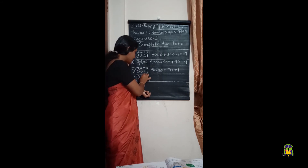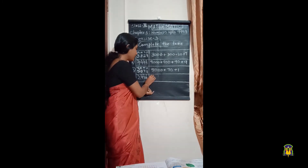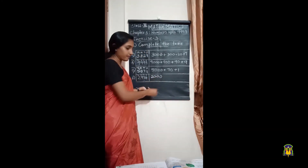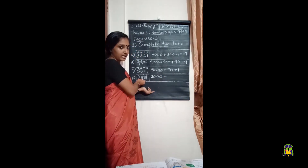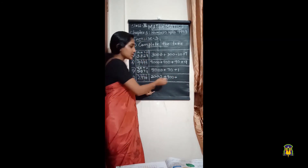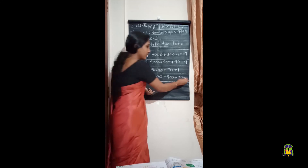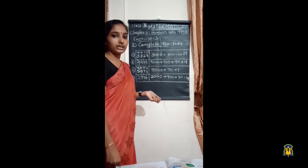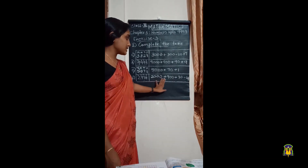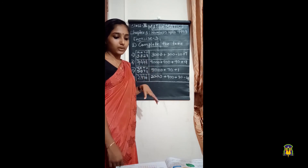So how do we write the expanded form? We write the place values: the place value of two is two thousand, nine is in the hundreds place so it's nine hundred, three is in the tens place so it's thirty, and four is in the ones place so its place value is four. The expanded form of two thousand nine hundred and thirty-four is 2000 + 900 + 30 + 4.